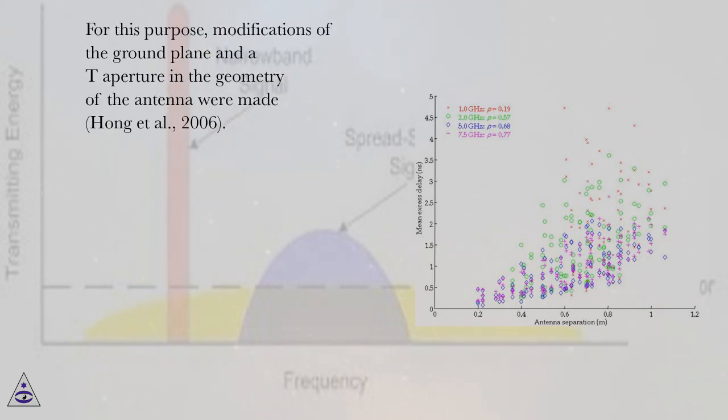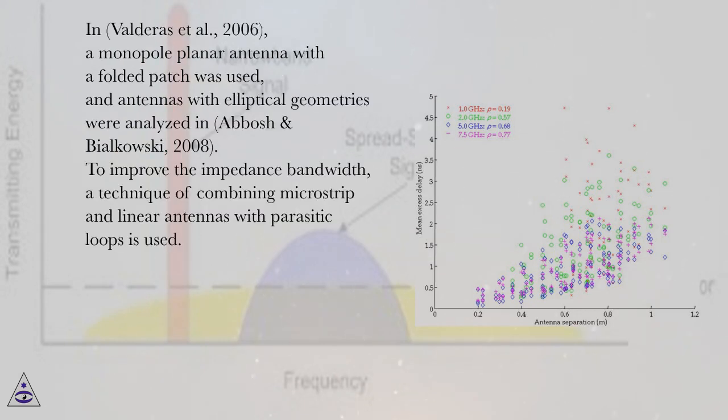For this purpose, modifications of the ground plane and a T aperture in the geometry of the antenna were made (Hong et al., 2006). In Valderis et al., 2006, a monopole planar antenna with a folded patch was used, and antennas with elliptical geometries were analyzed in Abbosh & Bialkowski, 2008.